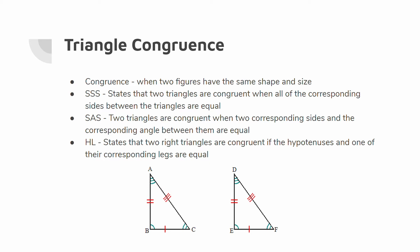Side-side-side, or SSS, states that two triangles are congruent when all corresponding sides are equal. Side-angle-side, or SAS, states that two triangles are congruent when two corresponding sides and the angle between them are equal. We also need to state that the hypotenuse-leg congruence theorem states that two right triangles are congruent if their hypotenuses and one corresponding leg are equal. We won't need this right now, but we will need it in a few minutes.